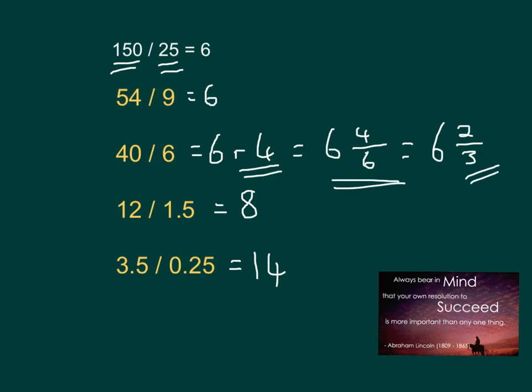There are 8 1.5s in 12. 8 times 1 is 8. 8 lots of a half is 4. And add that together, and then that will get you to your 12.